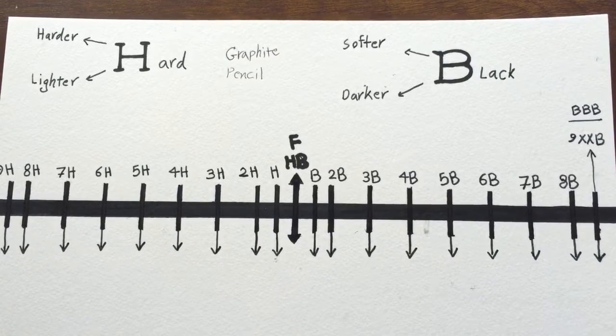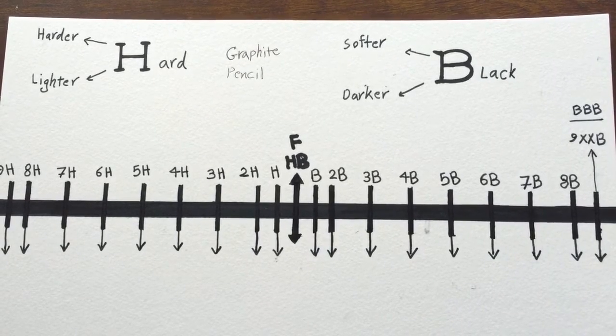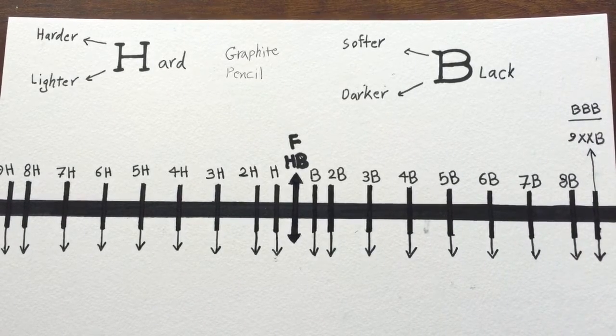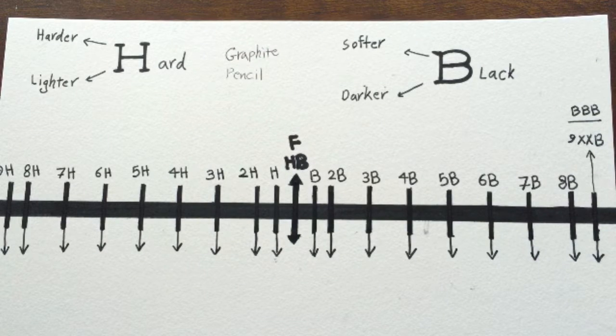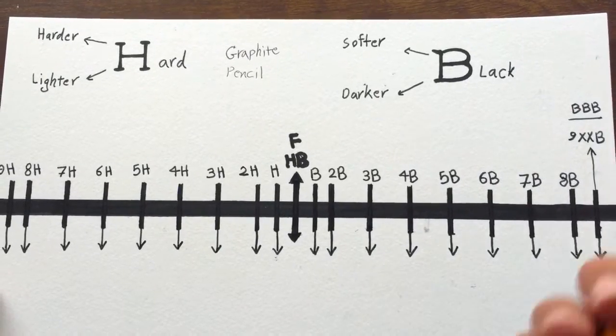Graphite pencils are made in two series: H series and B series. B means black, H means hard. B series are softer and darker, and they range from B to 9XXB. Sometimes they make them in three letters of B - they're really nice pencils but hard to find. H ones are made from H to 9XXB. When you go higher in H, the number goes higher and the pencil is lighter and harder. But in B, when you go higher, the pencil is softer and darker.